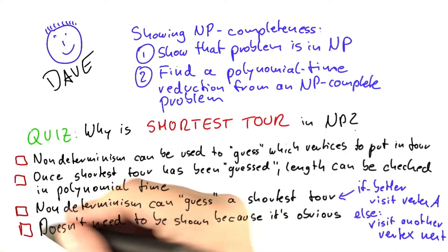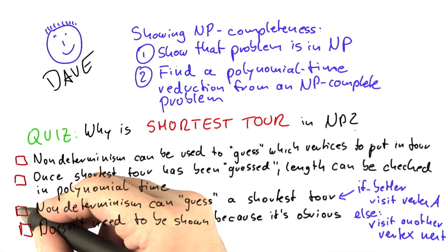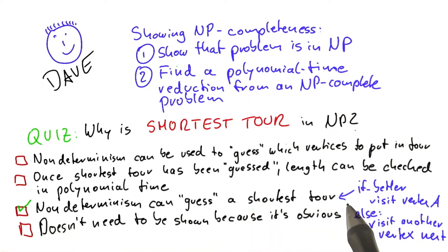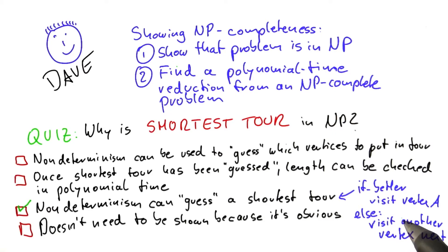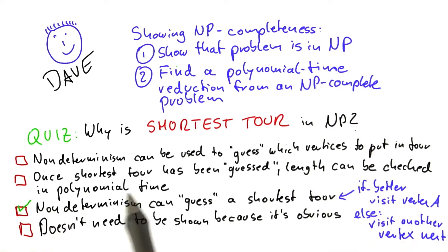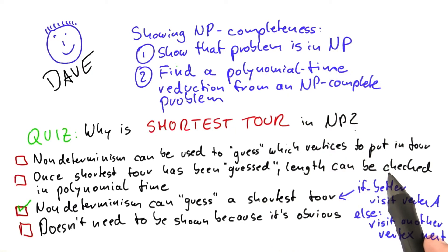There are two correct answers here. One is that we can use non-determinism to guess a shortest tour. It's not totally obvious how to do that because the if-better function can only do two distinctions, so you have to find a clever way to use that function to guess how to construct a shortest tour, but it's possible in the way that I showed you here. Then once the shortest tour has been guessed, checking if the length is shorter than d.